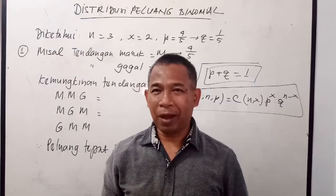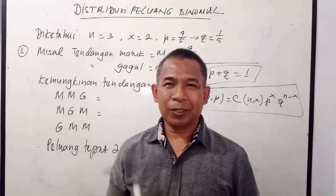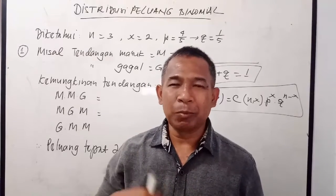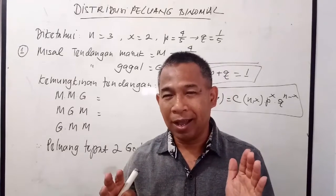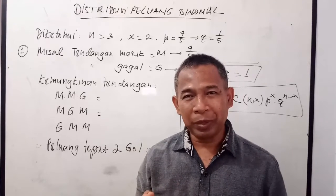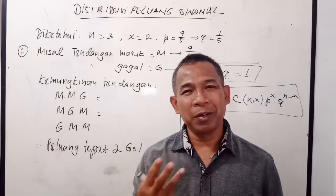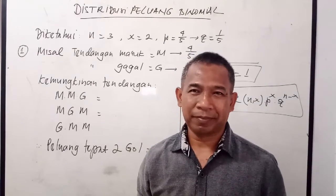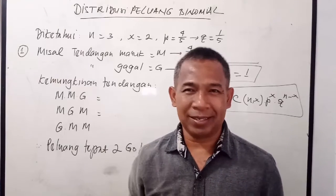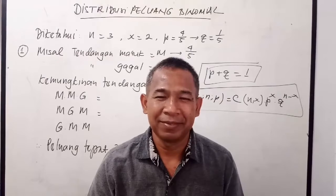Itulah yang dimaksud dengan peluang peubah acak binomial. Jika peluang-peluang tersebut nilainya kita susun dalam sebuah tabel atau dalam sebuah grafik, maka akan terbentuklah distribusi peluang binomial. Jadi peluang binomial ini terjadi dengan beberapa syarat: kejadiannya harus berulang-ulang, hanya punya 2 kejadian yaitu sukses atau gagal, setiap peluangnya selalu bernilai tetap, dan peristiwanya harus saling bebas.